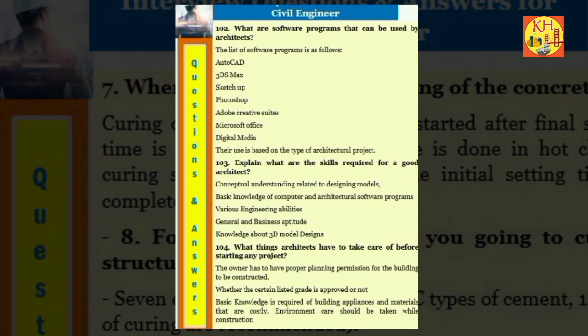Question 103: What are software programs that can be used by architects? The list of software programs is as follows: AutoCAD, 3ds Max, SketchUp, Photoshop, Adobe Creative Suites, Microsoft Office, Digital Media. The use is based on the type of architectural project. Question 104: Explain what are the skills required for a good architect. Conceptual understanding related to designing models, basic knowledge of computer and architectural software programs, various engineering abilities, general and business aptitude, knowledge about 3D model designs.